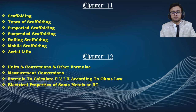Chapter 12 covers units and conversions and formulas — how to convert values from imperial to metric format, how to convert area from square meters to square feet, and formulas based on Ohm's law: how to find the V value, the I value, and the R value. We also cover the electrical properties of some metals at a given temperature.